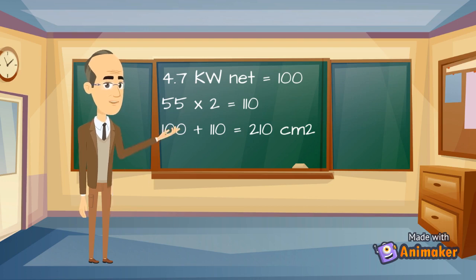So 100 plus 110 equals 210 centimeters squared permanent ventilation.